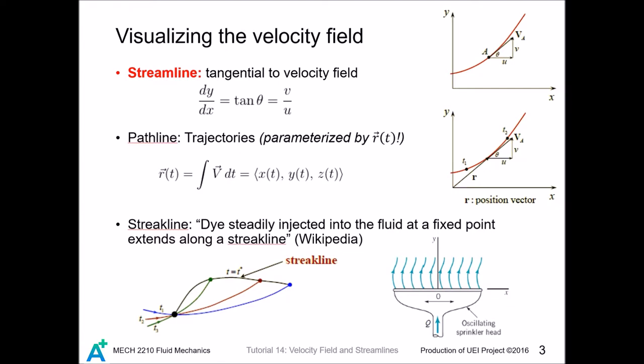The streamlines are the lines that are tangential to the velocity field. As you have learned in multivariable calculus, this definition gives the following formula. Another one, the path line, is just the trajectory of particles. Actually your job is done after integrating the velocity field and obtaining the position vector, but if you don't want a parameterization of the curve...